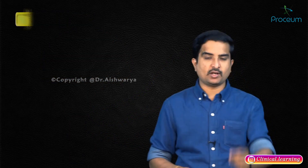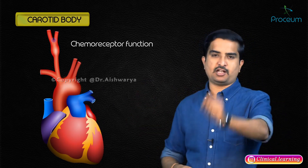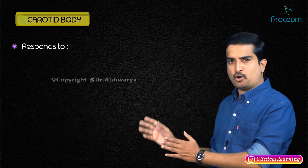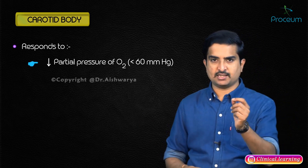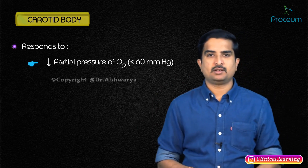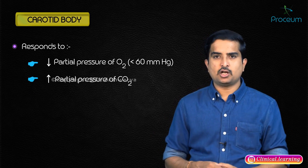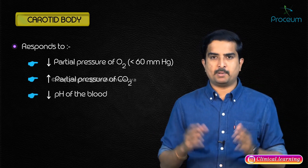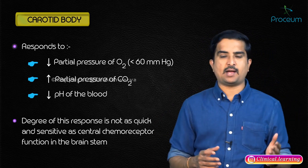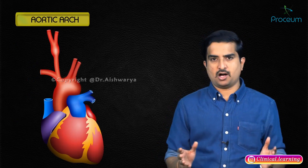The carotid body has chemoreceptor function, not baroreceptor function. It mainly responds to a drop in the partial pressure of oxygen below 60 mmHg. It can also respond to increased partial pressure of carbon dioxide or a drop in blood pH, but this response is not as quick and sensitive as the central chemoreceptor function in the brainstem.